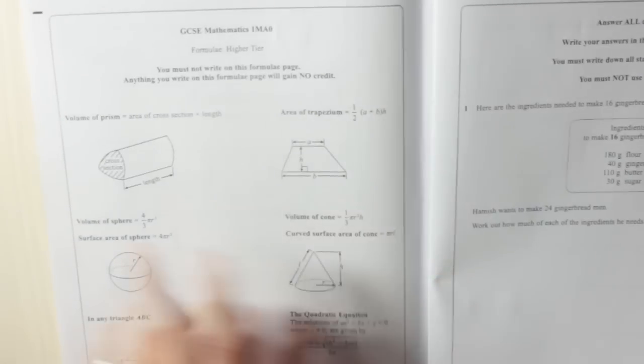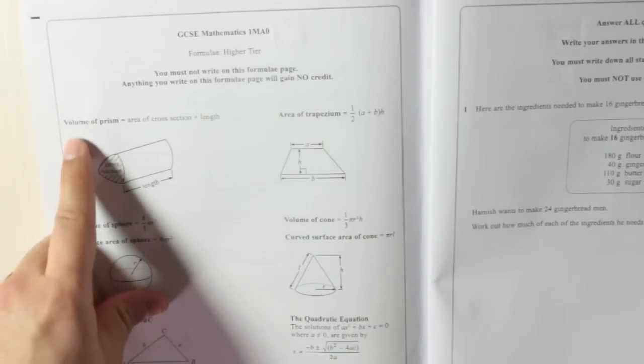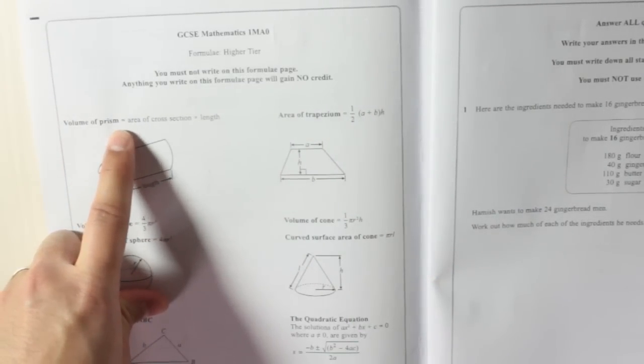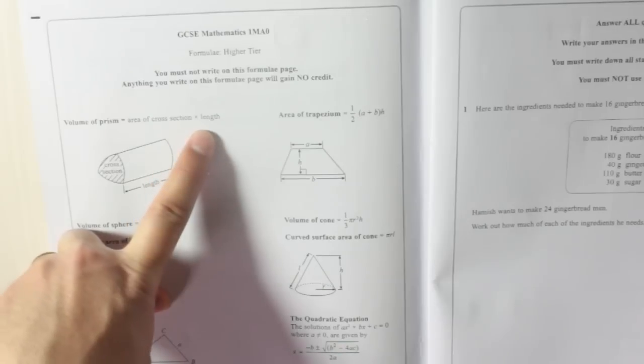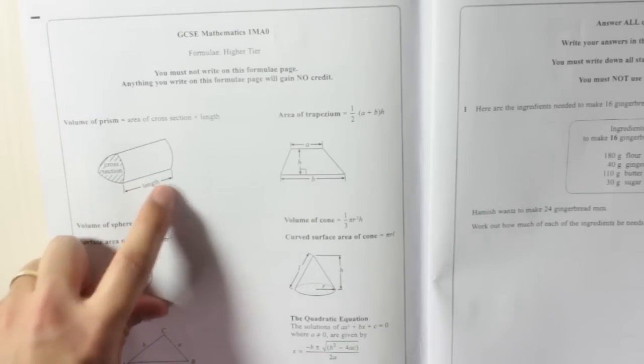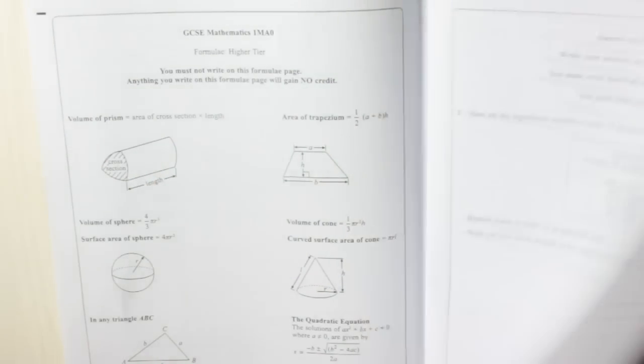Now if you can't remember how to find the volume of a prism, it tells you right there. Volume of prism is equal to area of cross section times by length. There's the cross section times by length, so they're even telling you how to do it at the front.